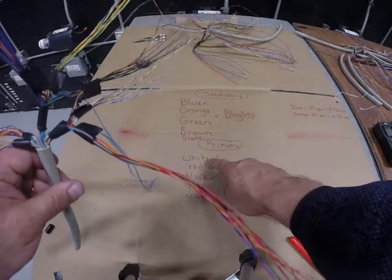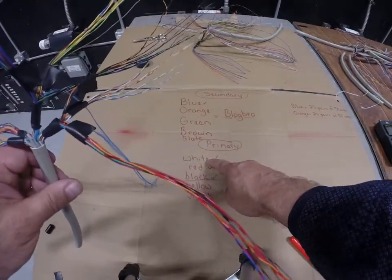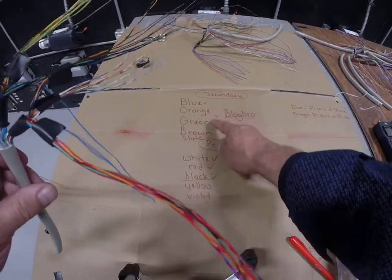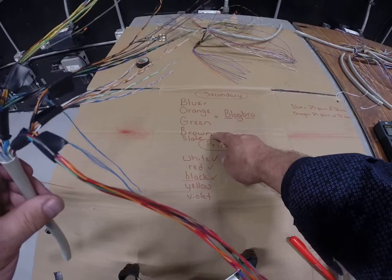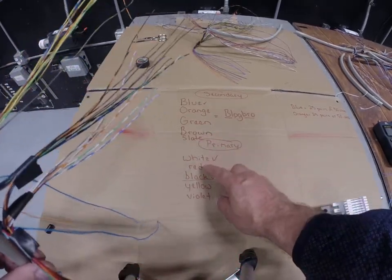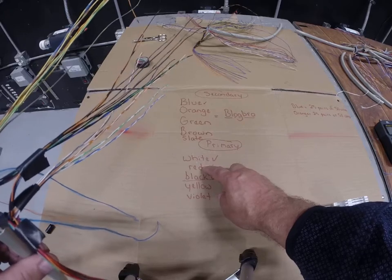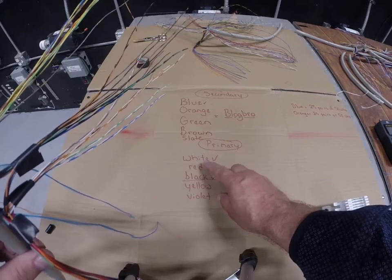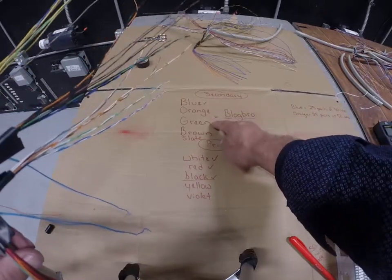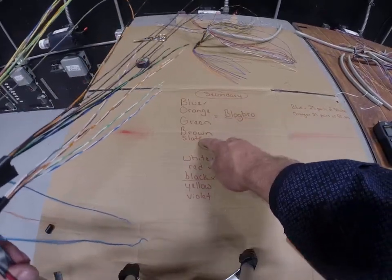I need to find the white set first. And what you're going to see is you're going to have a white blue, white orange, white green, white brown, white slate. Once I find all the whites, then I'm going to go to the red color in that set. And then it'll be red blue, red orange, red green, red brown, red slate.